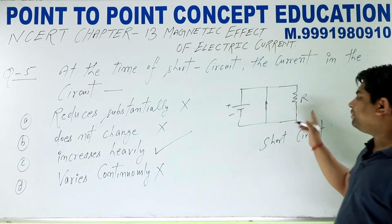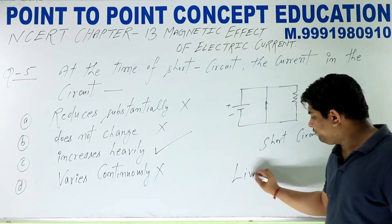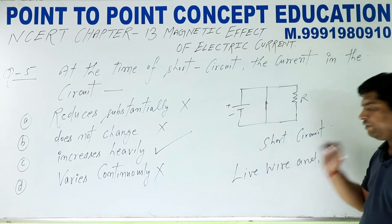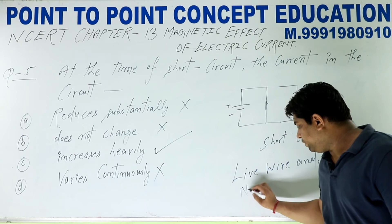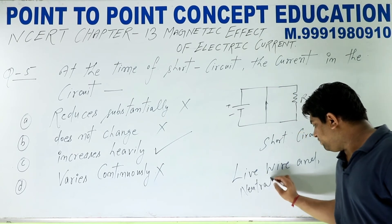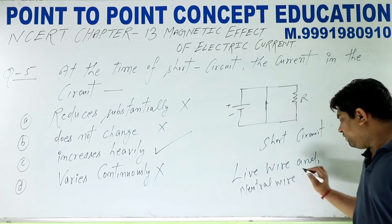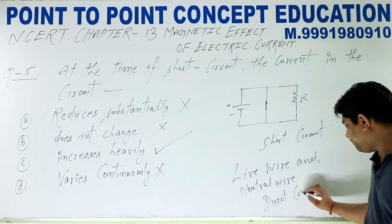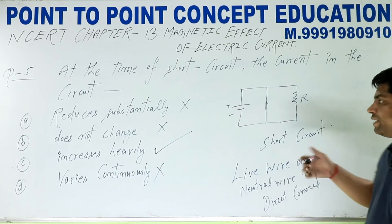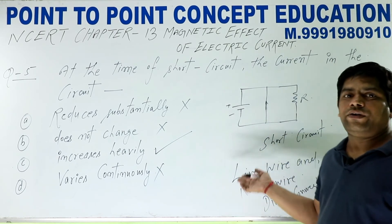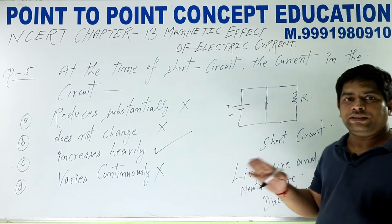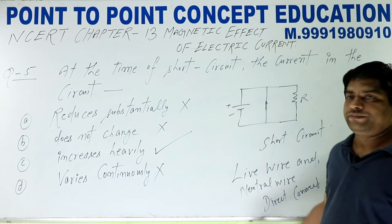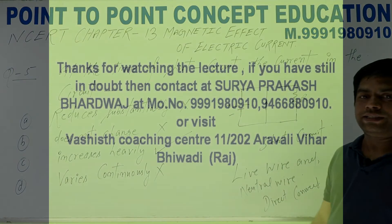तो short circuit का मतलब क्या बताया — live wire और neutral wire direct contact में आ जाना। इसका मतलब है किसी भी तरह से, अगर live wire और neutral wire आपस में touch हो जाते हैं, तो उस case में short circuit हो जाता है। तो इसे इस तरह से समझा जाता है।